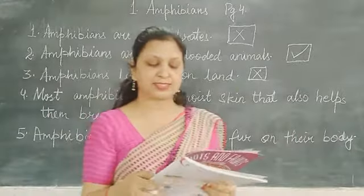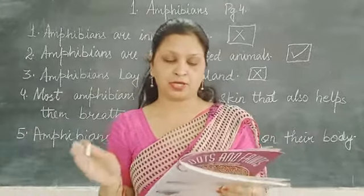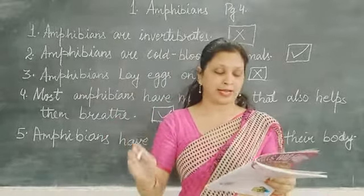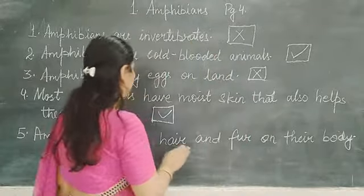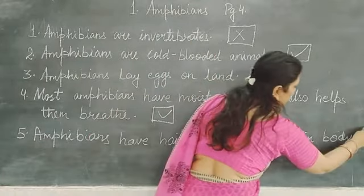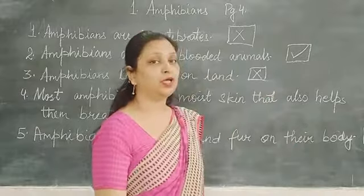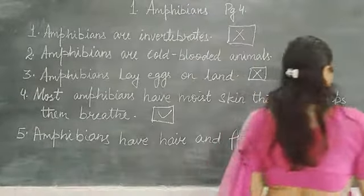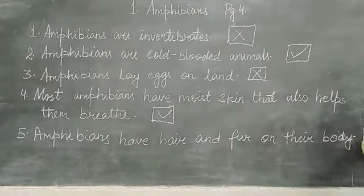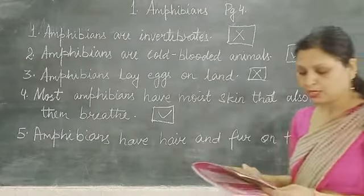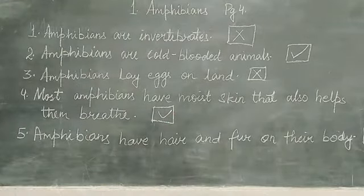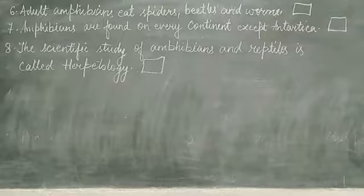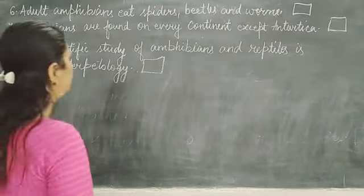Actually, as they have to live a double life — in water as well as on land — they do not have hair or fur. Hair or fur would not be useful in water, so that is why amphibians do not have hair or fur. The sixth point is: adult amphibians eat spiders, beetles, and frogs. This is correct because adult amphibians eat small animals and insects.